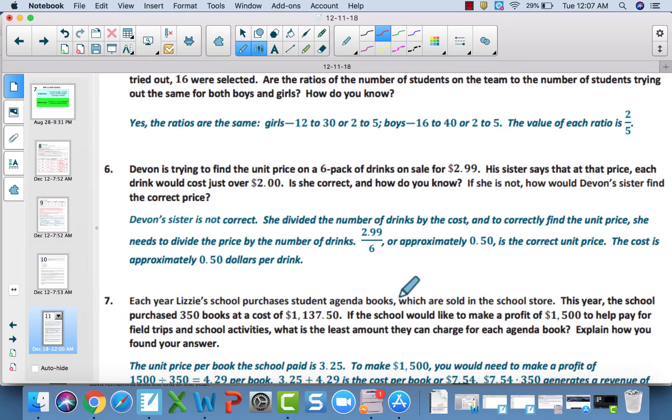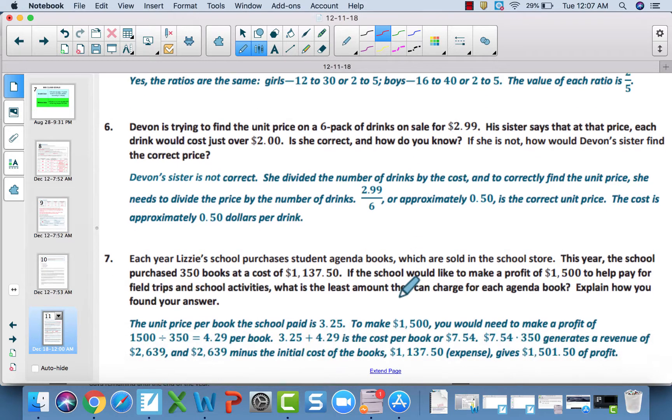Number six, Devin's sister is not correct. She actually divided in the wrong order. She needs to divide the price by the drink. Remember, we always do the dollars first to find unit price. The unit price is approximately 50 cents, not about two dollars.